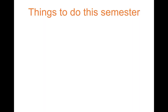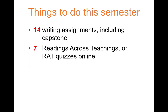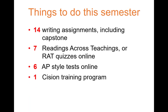So, what will we be doing this semester? First, we're going to have 14 writing assignments including the capstone, which actually has five elements. Second, we're going to have seven quizzes based on the readings. Next, we're going to have six AP style tests. Both the readings quizzes and the AP style tests will be online. We'll be taking a Cision training program — it's free, online, and self-directed. And last, you're required to have an editing session before spring break.